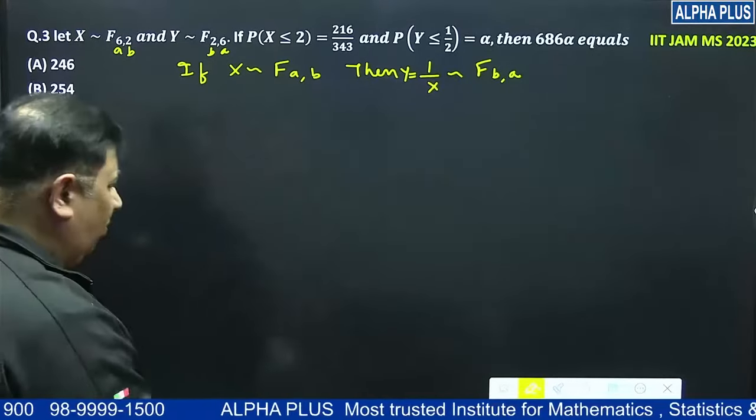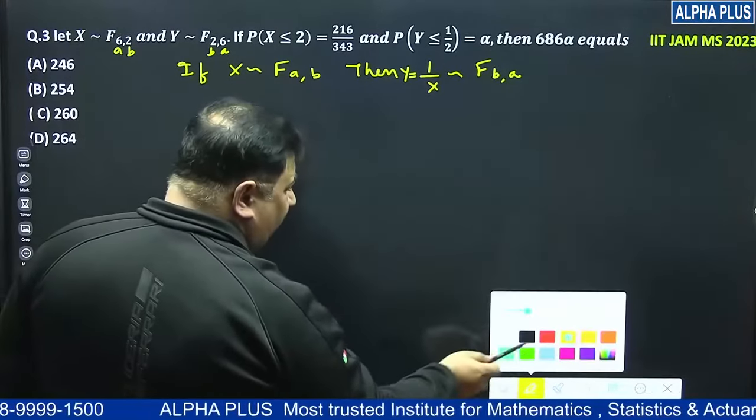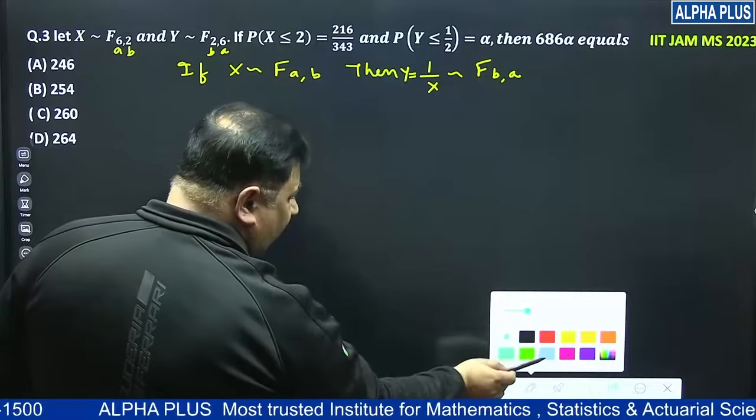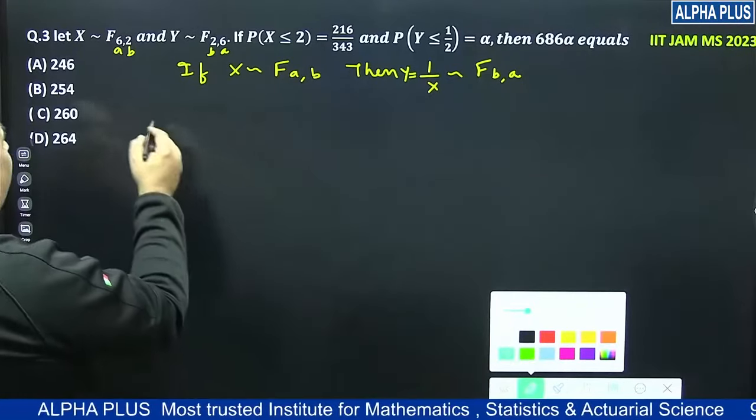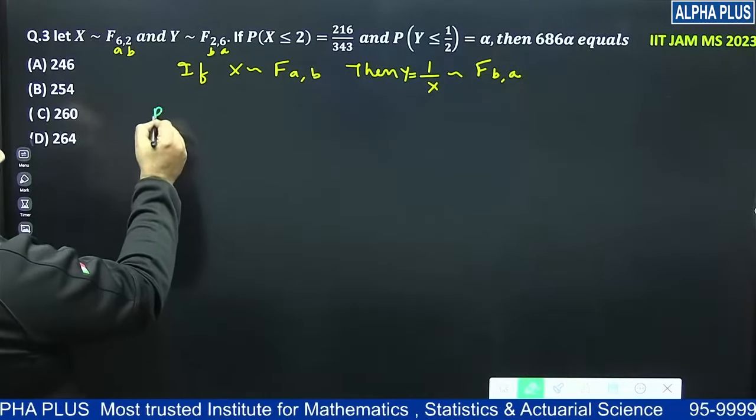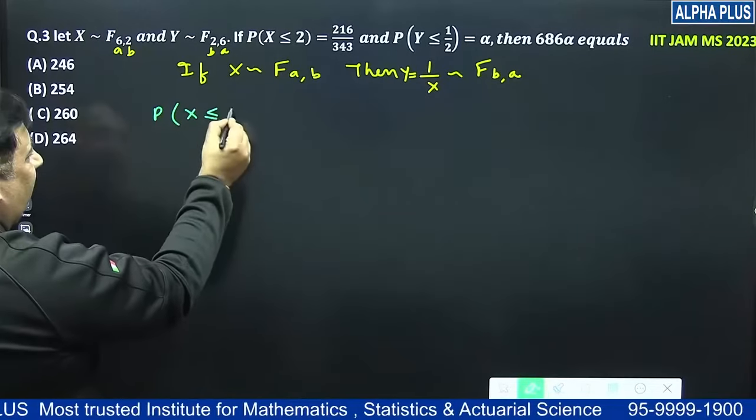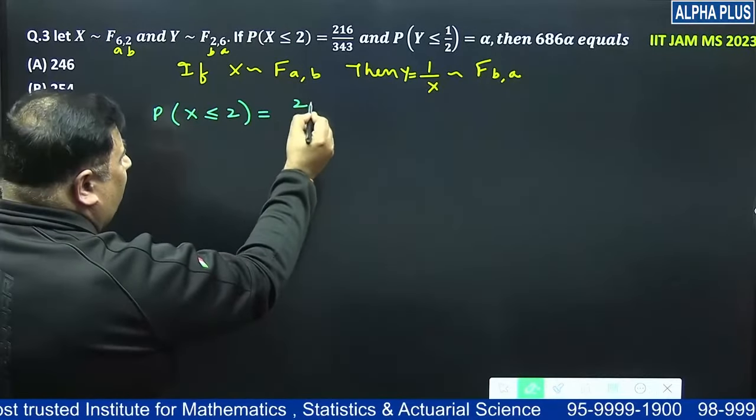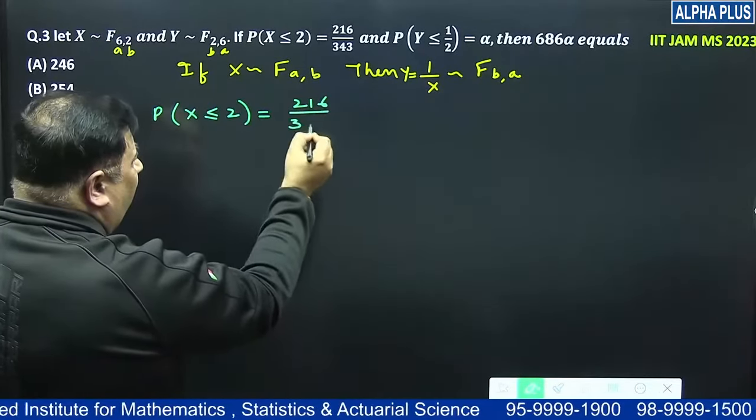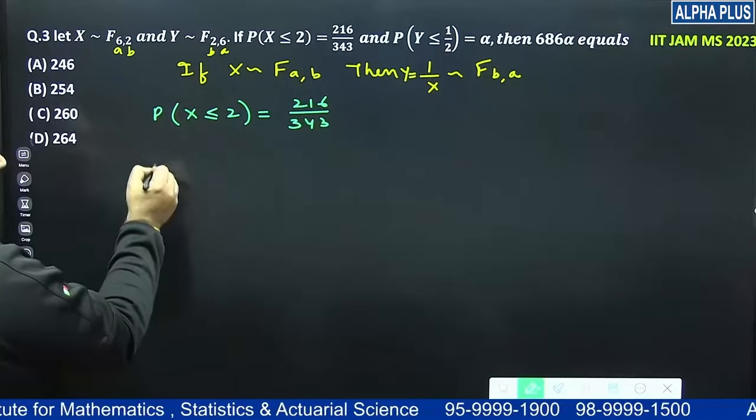Now onto the solution. Let's see what's written here. Look at the green color. What are they asking? Probability X is less than equal to 2 is equal to 216 upon 343. So can I explain this now?